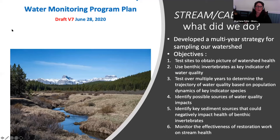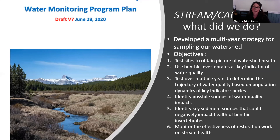We created a water monitoring program — a multi-year strategy for sampling our watershed — to test sites and obtain a picture using benthic invertebrates as key indicators of water quality, tested over multiple years to detect the trajectory and dynamics of these key indicator species, to identify possible sources of watershed impacts, identify key sediment sources that could negatively impact the health of benthic macroinvertebrates, and to monitor the effectiveness of restoration work on stream health.